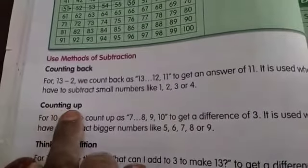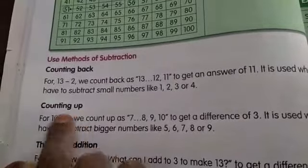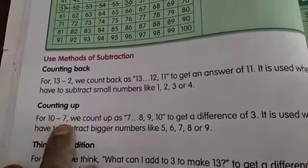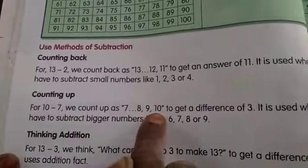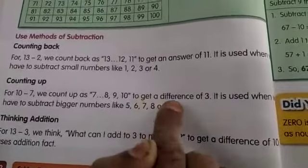Now next is counting up. For 10 minus 7, we count up as 7, 8, 9, 10. We get a difference of 3.